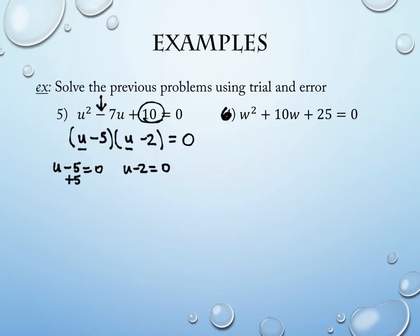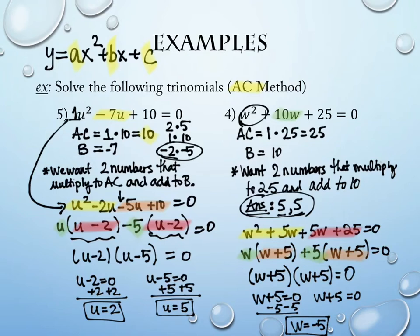And then you set each part equal to 0 to solve. So on the first one, we're going to add 5 to both sides. So u is 5. On the second one, we're going to add 2 to both sides. So u is 2.